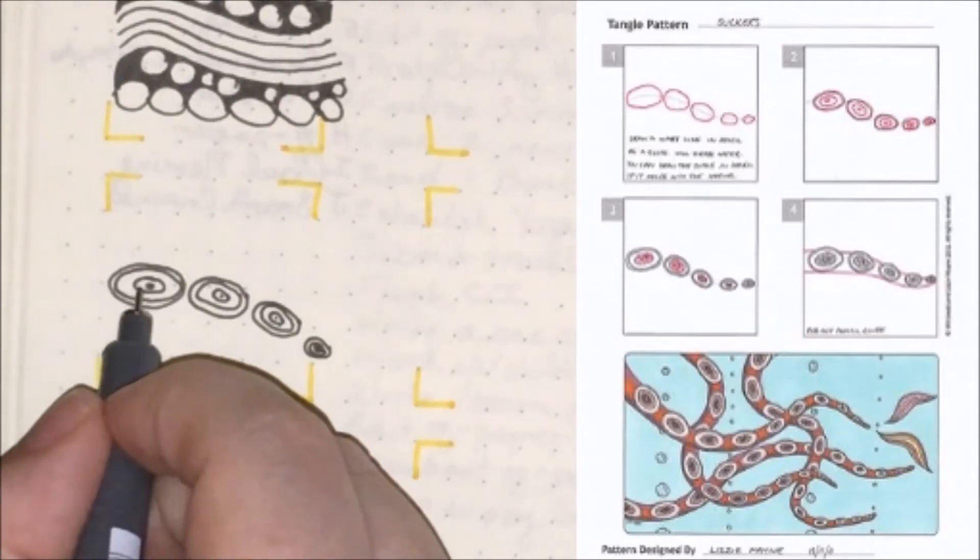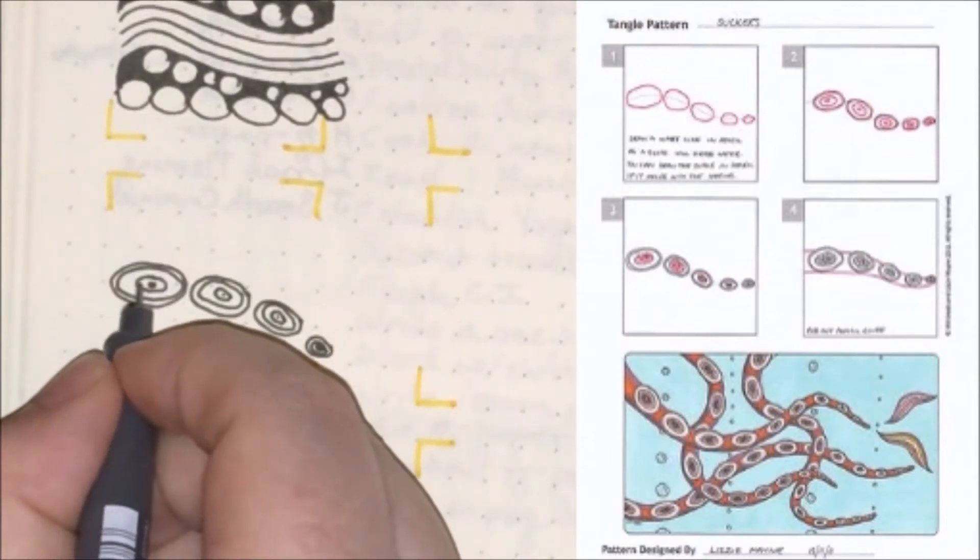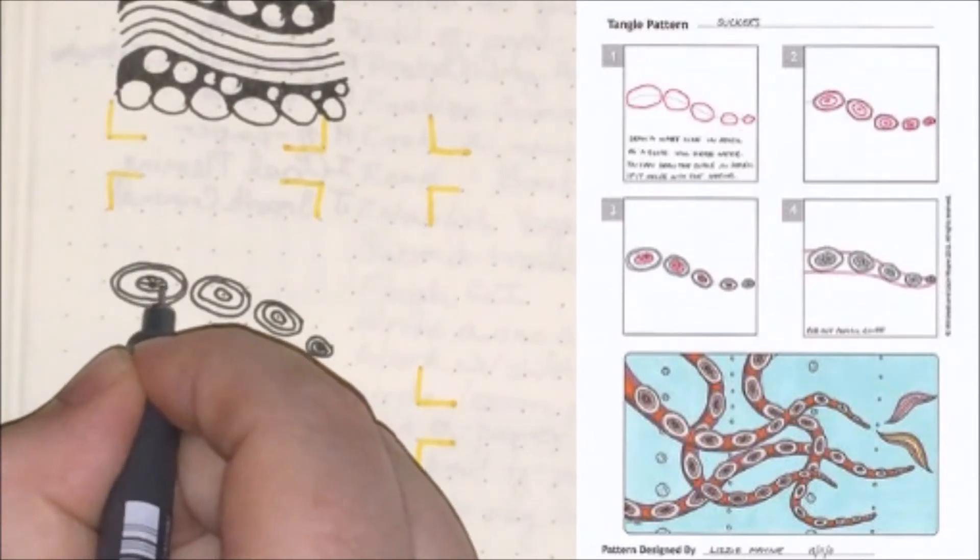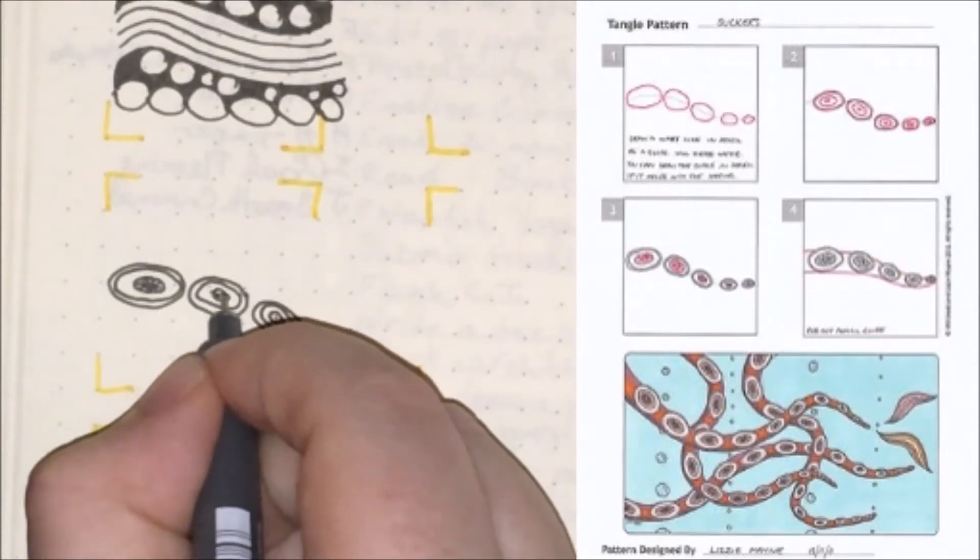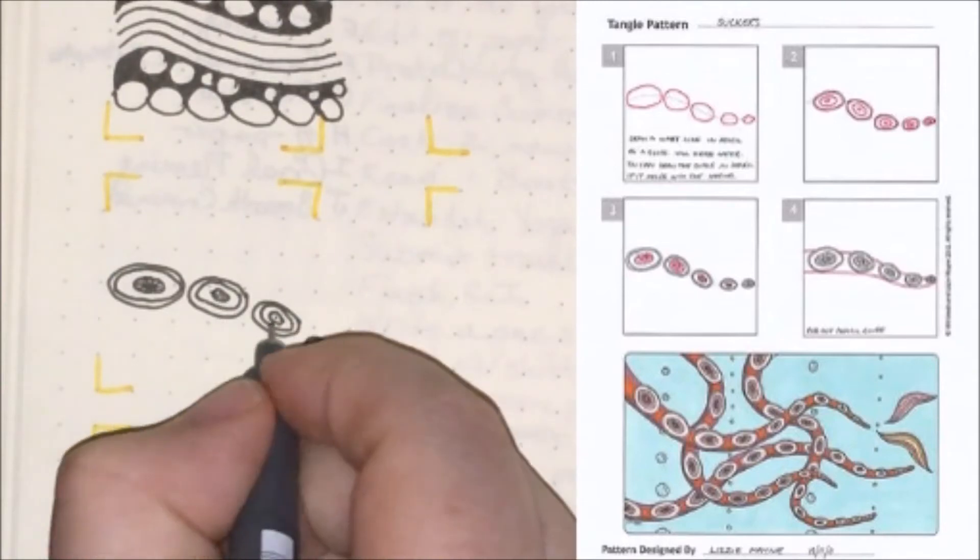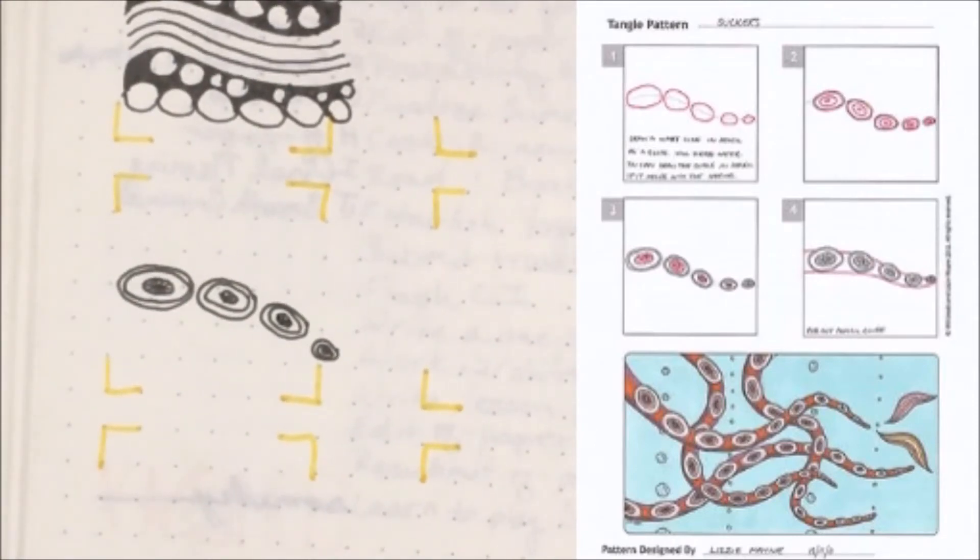And then in between the last two ovals you drew in any given sucker, you want to draw straight lines that project radially outward from the center. This can look a little bit messy on some of the smaller ones.